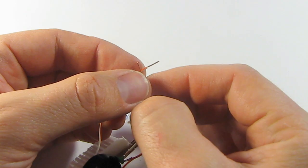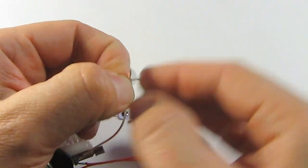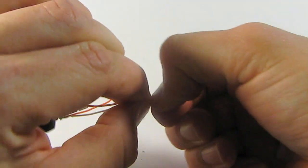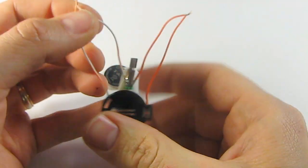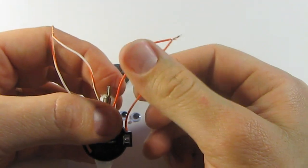Now let's do the same thing with the other side. Make the X, grab it, twist, twist, twist. Alright, now that was the most difficult part of the whole build.